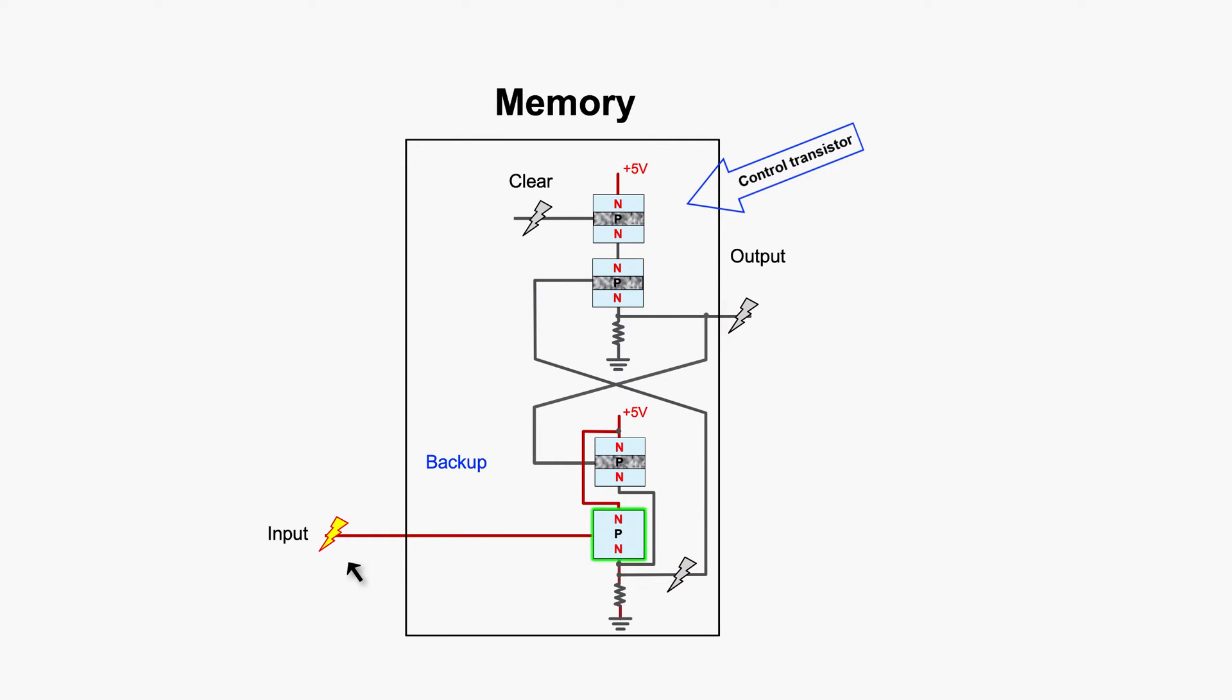But now when you pass data input, not only you need this control transistor conducting permitting data to pass, but also you need to keep it conducting in order to maintain the output. So you better leave it conducting naturally. By connecting it to high voltage, then by default it will always be on.